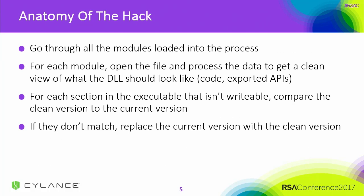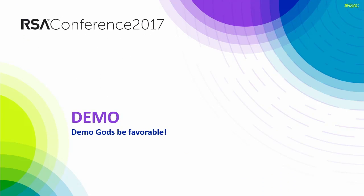Here is how it basically works — it all happens in the blink of an eye because we've automated it. In the user land space, it goes through all modules loaded into a process. For each module, it opens the files and processes the data for a clean view of what the DLL should look like. Then for each section in that DLL that isn't writable, we compare that clean version to the current version. If they don't match, we replace the current version with the clean — in other words, we can tell if it's already been hooked and we can unhook it.